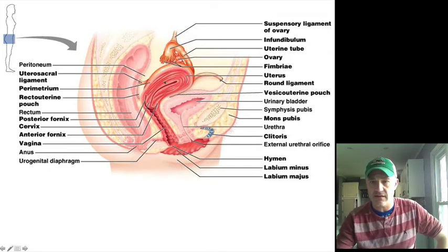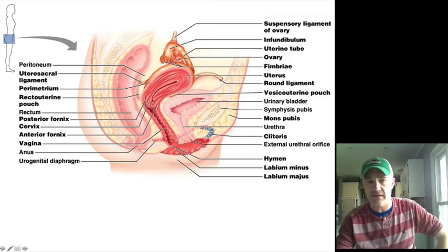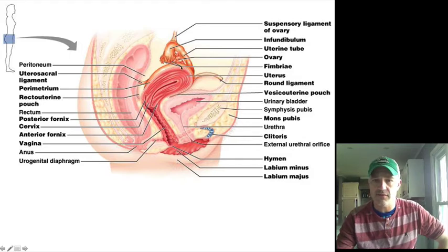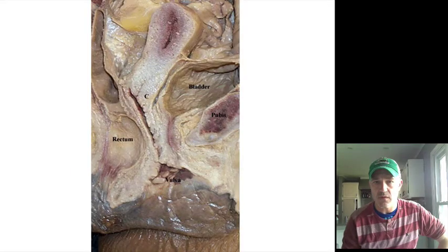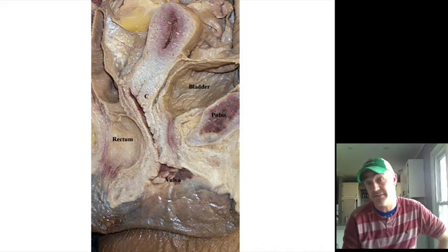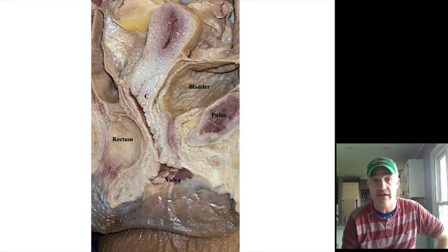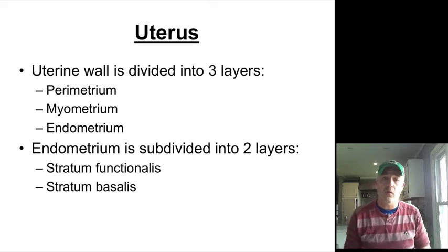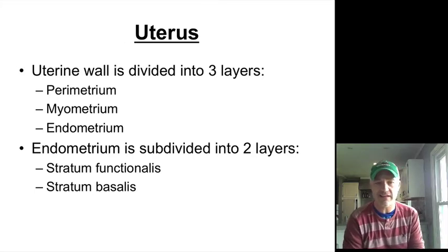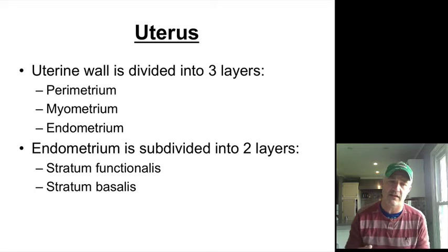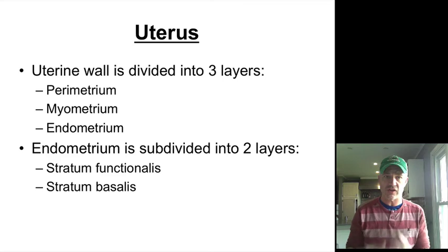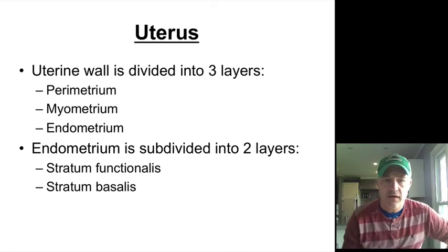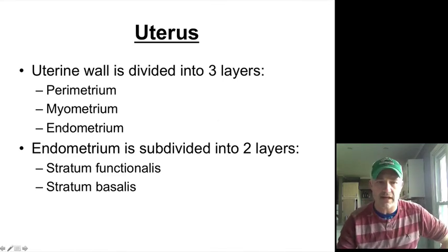As you can see, the uterus is anteverted, leaning over the bladder. The fundus is the top portion and the main body is below it, with the cervix as the opening into the uterus. You can also see it in a cross-section—an actual specimen sliced in half. The wall has three main layers: the myometrium, which is the thick muscle layer; the endometrium, which builds up and is shed during menses; and the endometrial layer is what we focus on most.